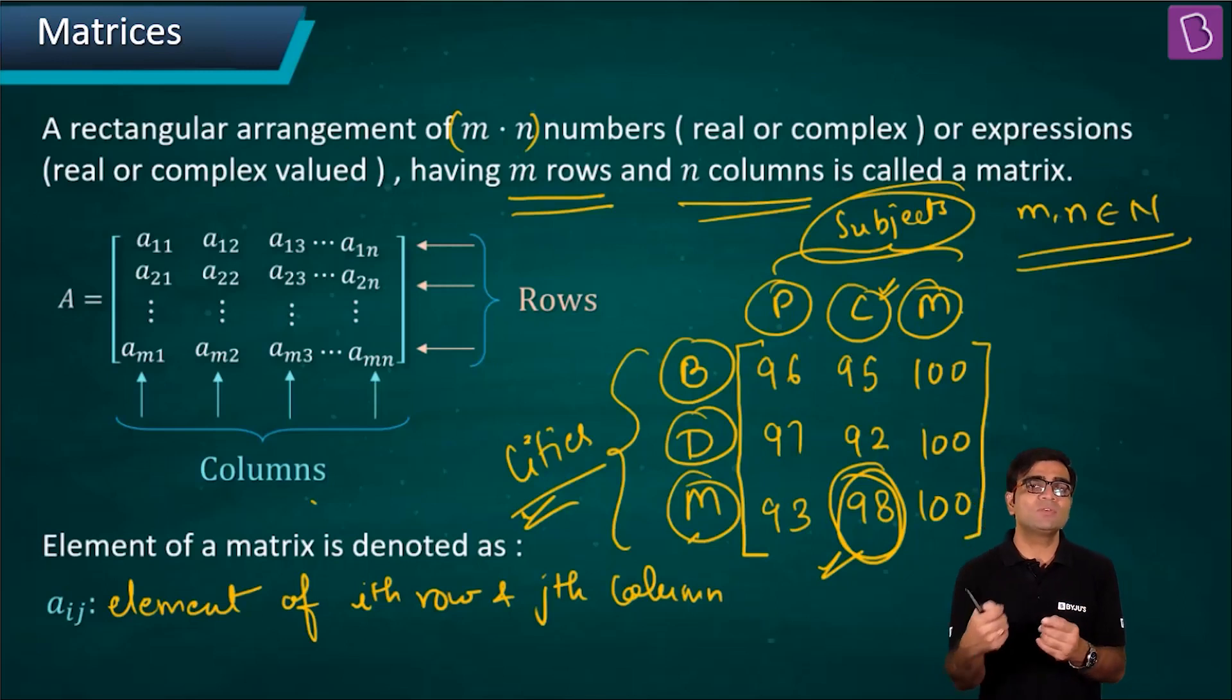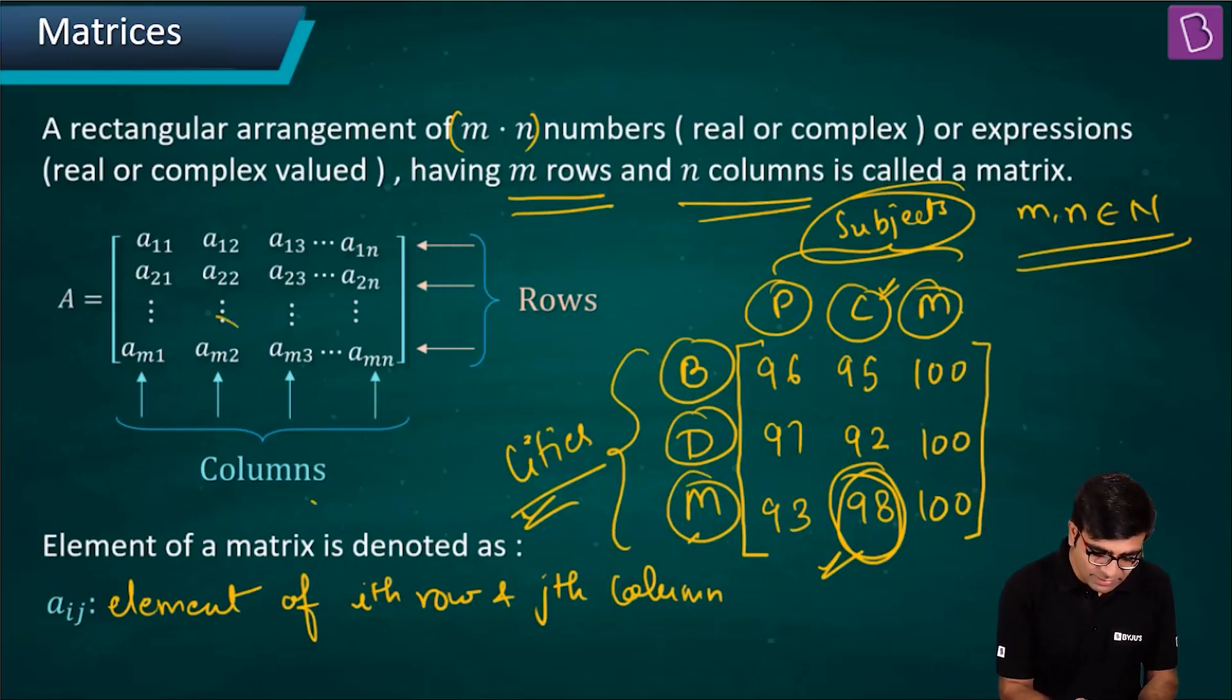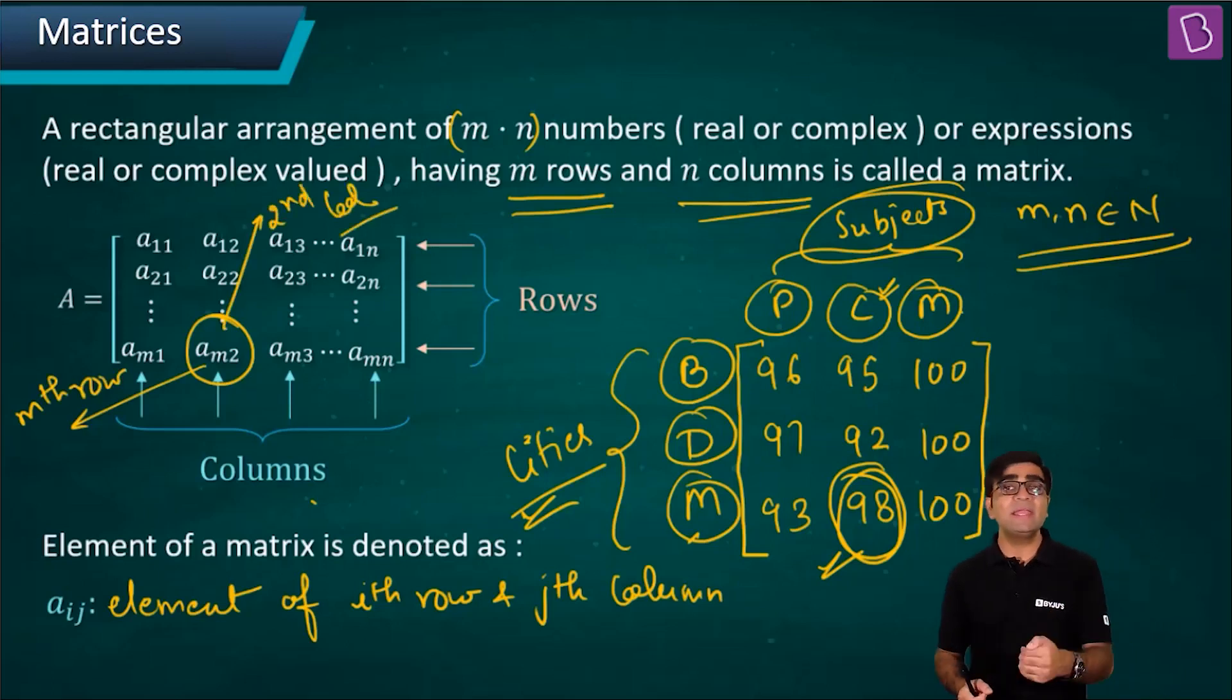aij: i is the row and j is the column. If I talk about am2, I have this as mth row and second column. So am2 is the mth row and second column element. That's why I'm calling it am2.